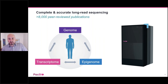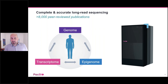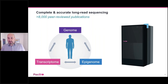Cancer is an extremely complex disease or set of diseases, and we need to take a really multi-omic approach to understanding it. Ideally, we should have tools that can interrogate the full genome, the complete transcriptome, and the complete epigenome. We are now at the point that we can have a single platform that can do this at scale, as you can see on the right with the new Revio system.